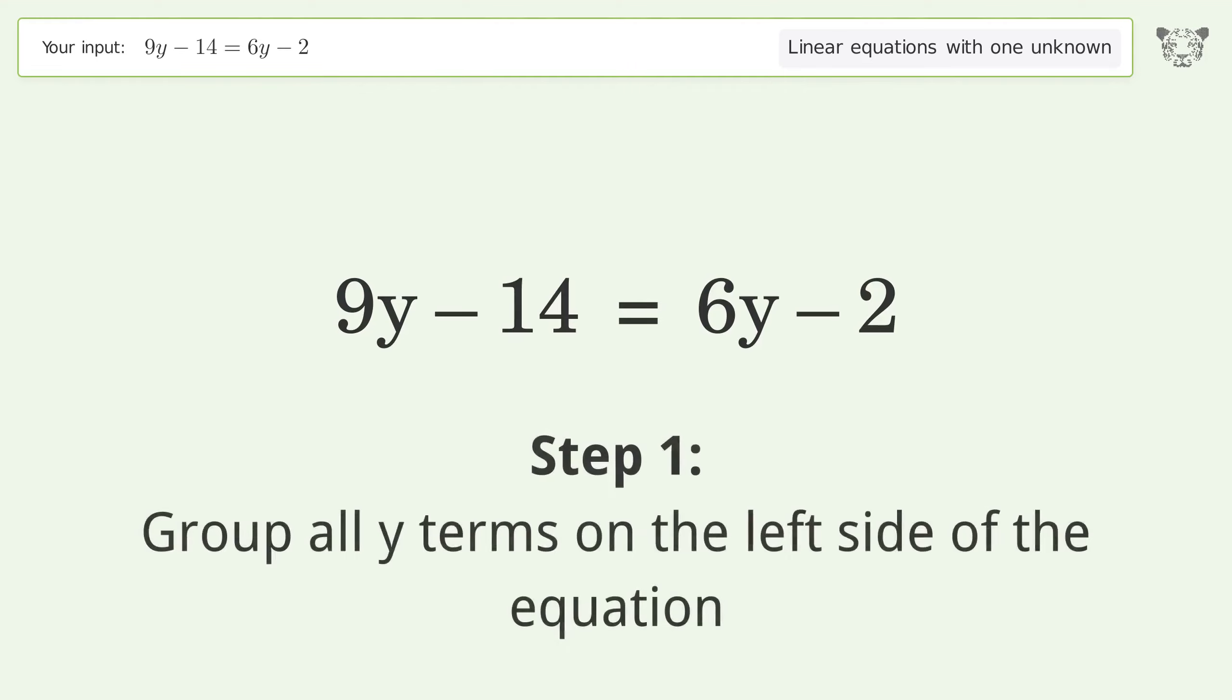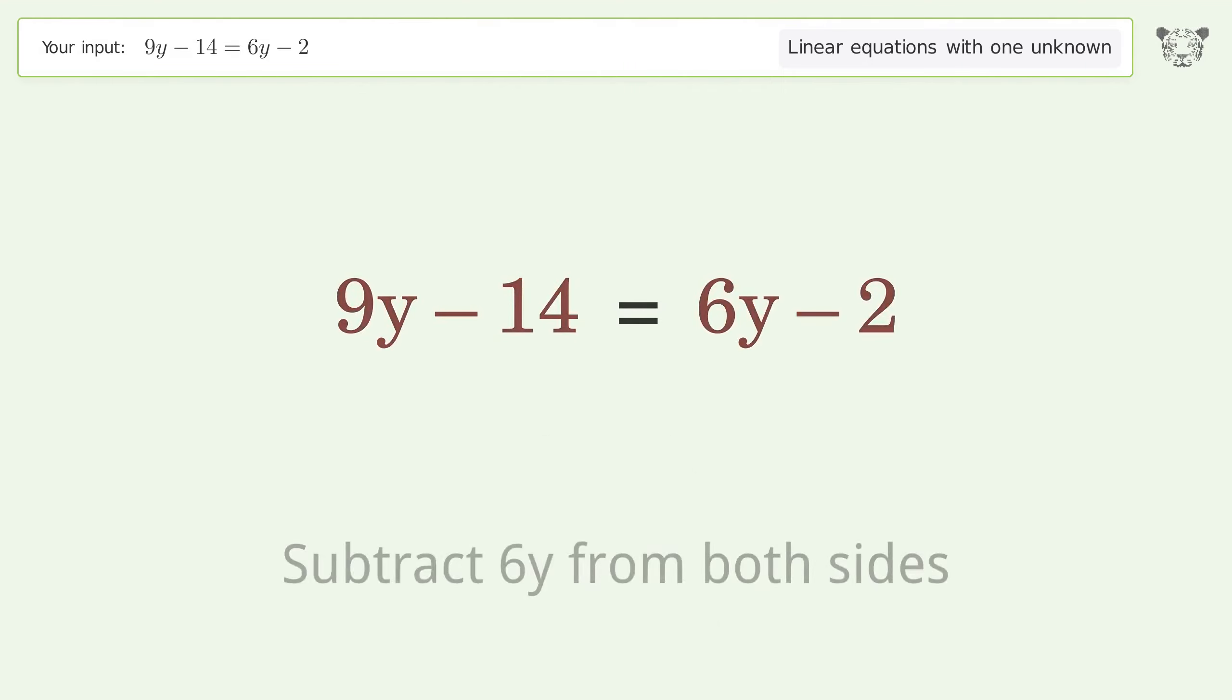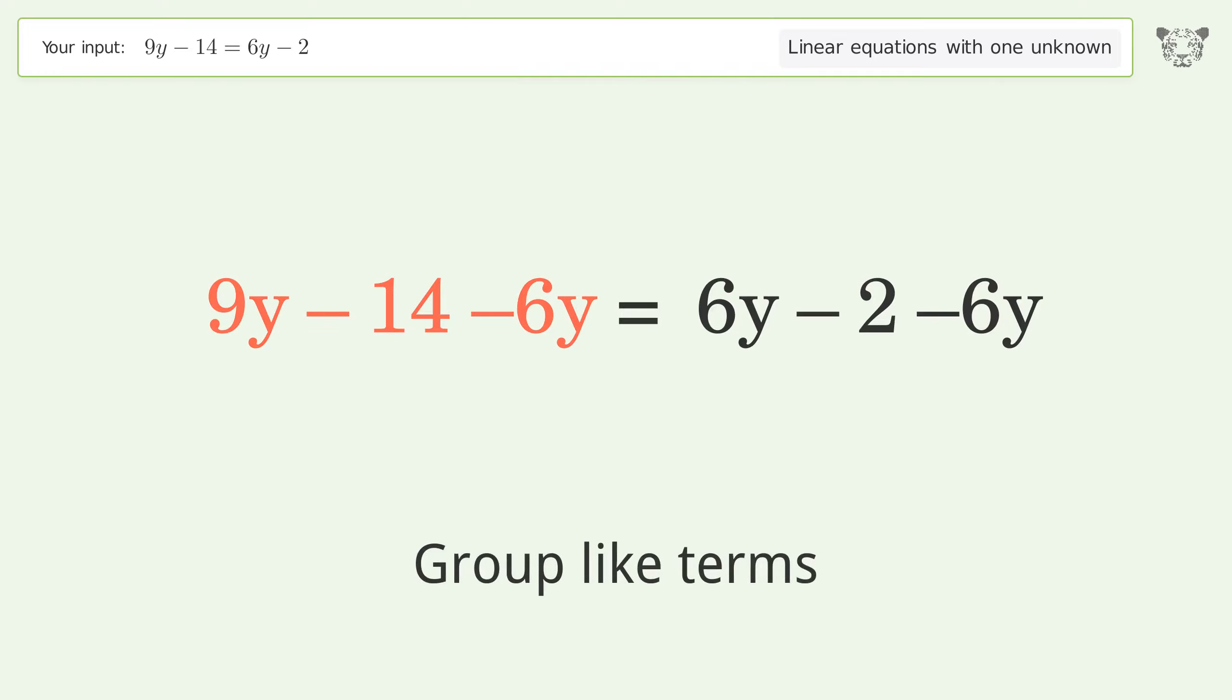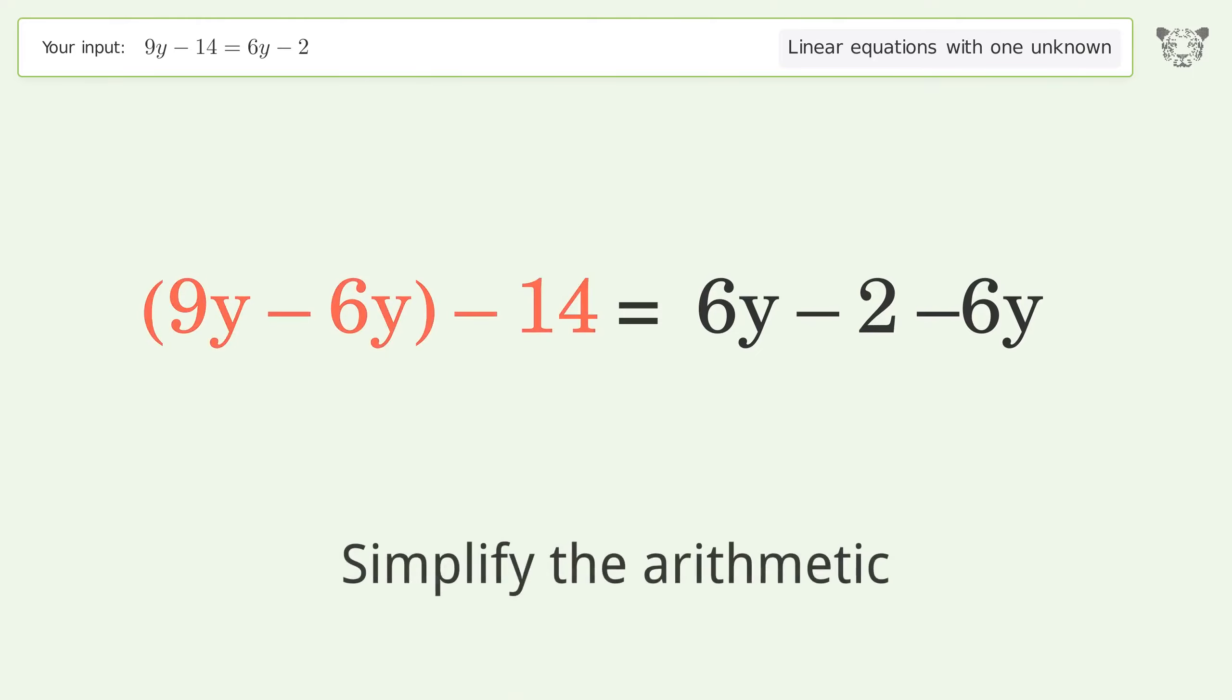Group all y terms on the left side of the equation. Subtract 6y from both sides. Group like terms. Simplify the arithmetic.